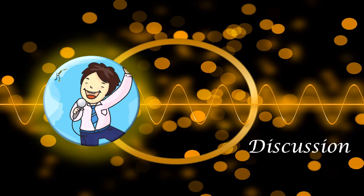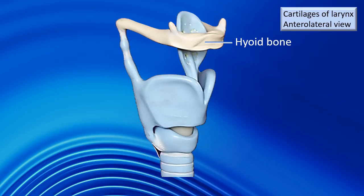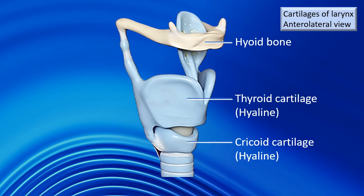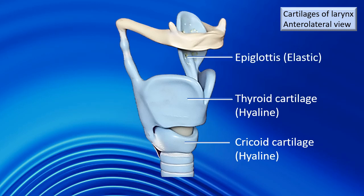Now, this is a model of the larynx highlighting the cartilages. Shown in ivory yellow is the hyoid bone, but we are focusing more on the cartilages. The large cartilage in the middle is the thyroid cartilage. Below that is the cricoid cartilage — I have used the word hyaline because that is the type of cartilage these are made of. Next, one more cartilage is highlighted — that is the epiglottis. The type of cartilage here is different; it is an elastic cartilage.